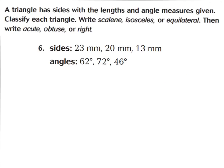Pay attention to the dimensions for question number six, and write what type of triangle you think this one would be. Because all of the sides are different lengths, this would have to be a scalene triangle. And because all of the angles are acute — meaning they're all less than 90 degrees — this is an acute triangle as well. So we would call this scalene acute, or acute scalene.